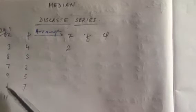For the first example, we have a distribution — this is the discrete series. The values of x given are 3, 8, 7, 9, 2, and 11. When we talk about discrete series, there will obviously be frequencies, which are 4, 3, 2, 5, 7, and 3.